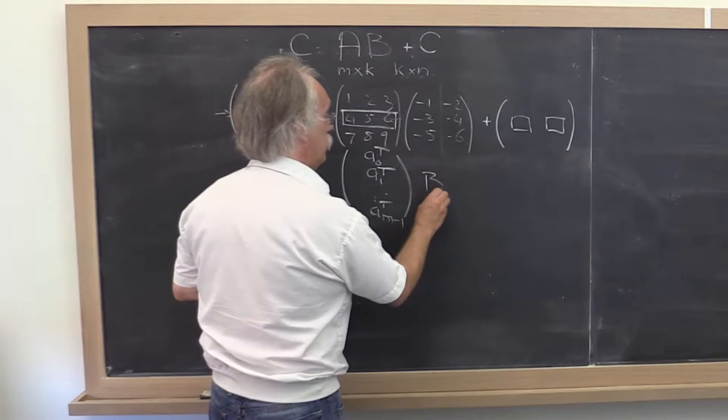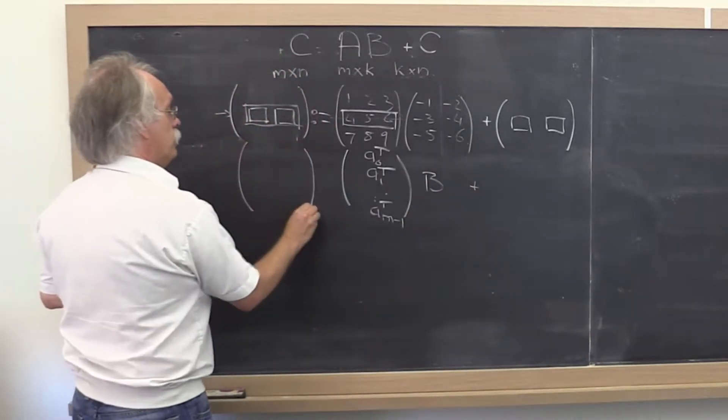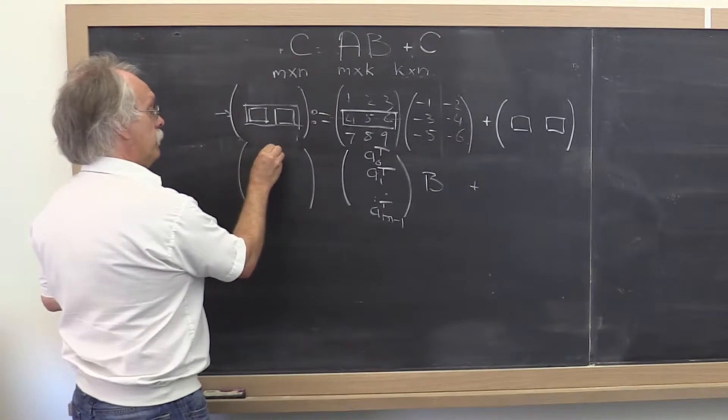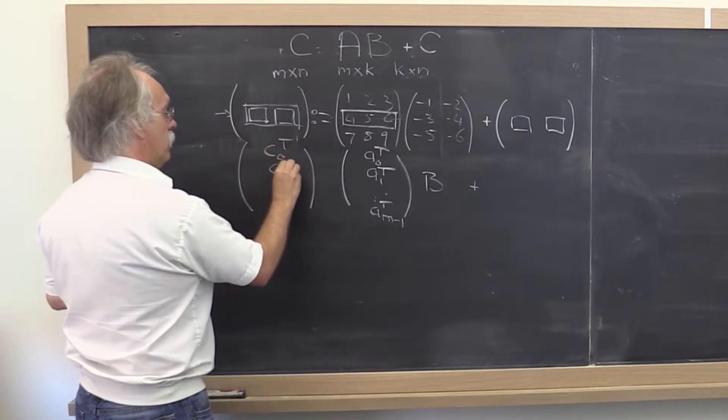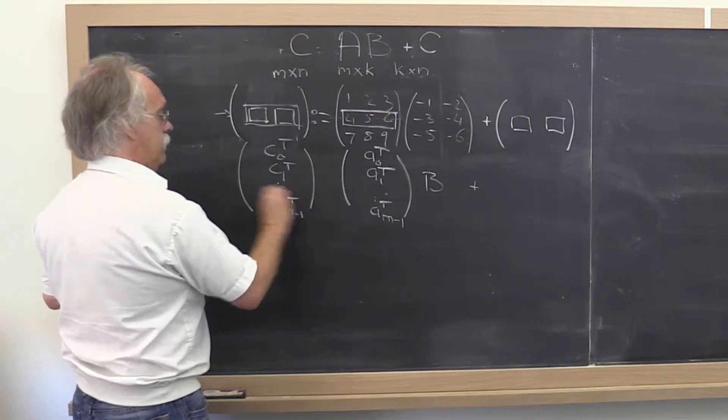We leave matrix B alone. We notice that C should also be partitioned by rows. So we get C0, C1, through C M-1, like that.